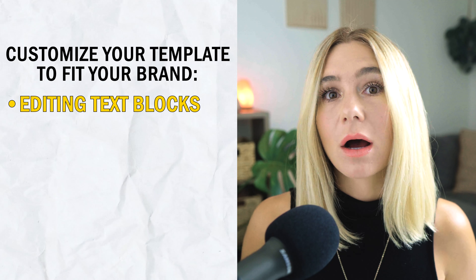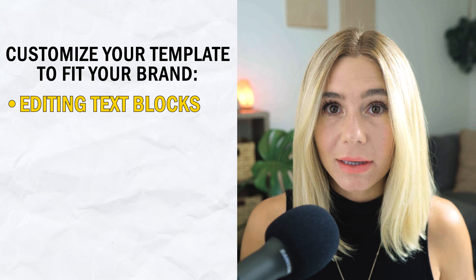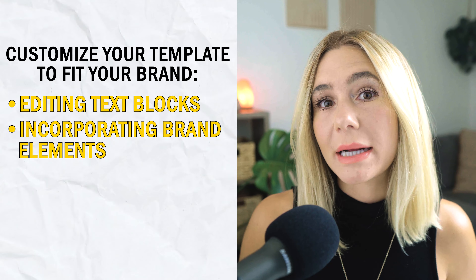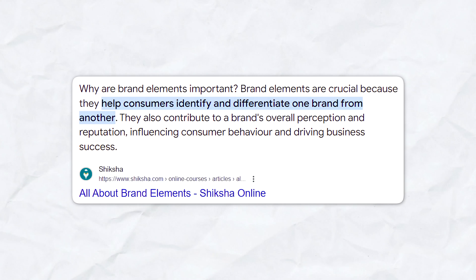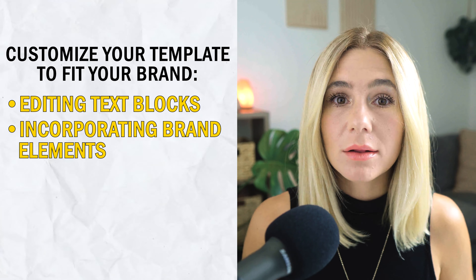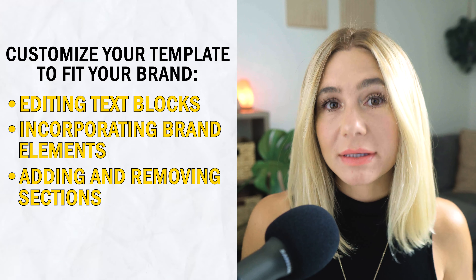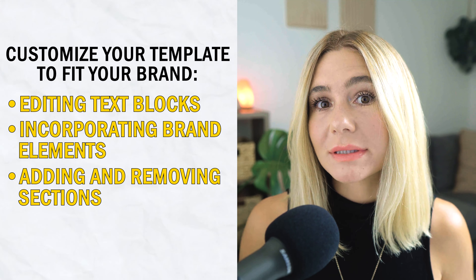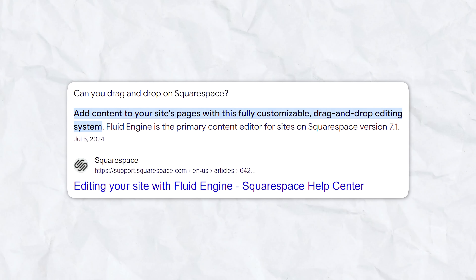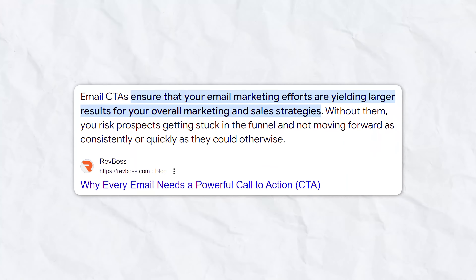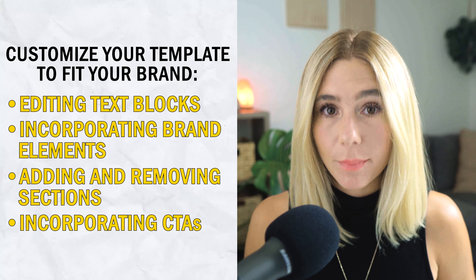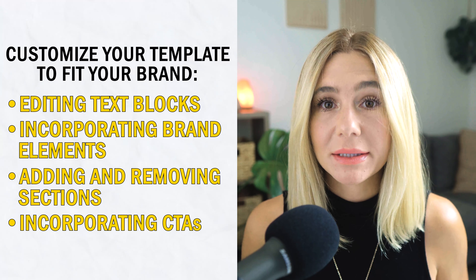Here's how to customize your template to fit your brand. First, editing text: begin by clicking on any text block within the template, which will bring up the text editor where you can change the content, font, size, color, and alignment. Next, incorporating brand elements: branding is key to a cohesive and recognizable look, so replace any placeholder logos, colors, or fonts with your own. Then, adding and removing sections: depending on the purpose of your email, you may want to add or remove sections — Squarespace's drag and drop functionality makes this easy. Lastly, incorporating calls to action: every effective email campaign needs a strong CTA, whether you want readers to visit your website, make a purchase, or sign up for an event. Your CTA should be clear and compelling.